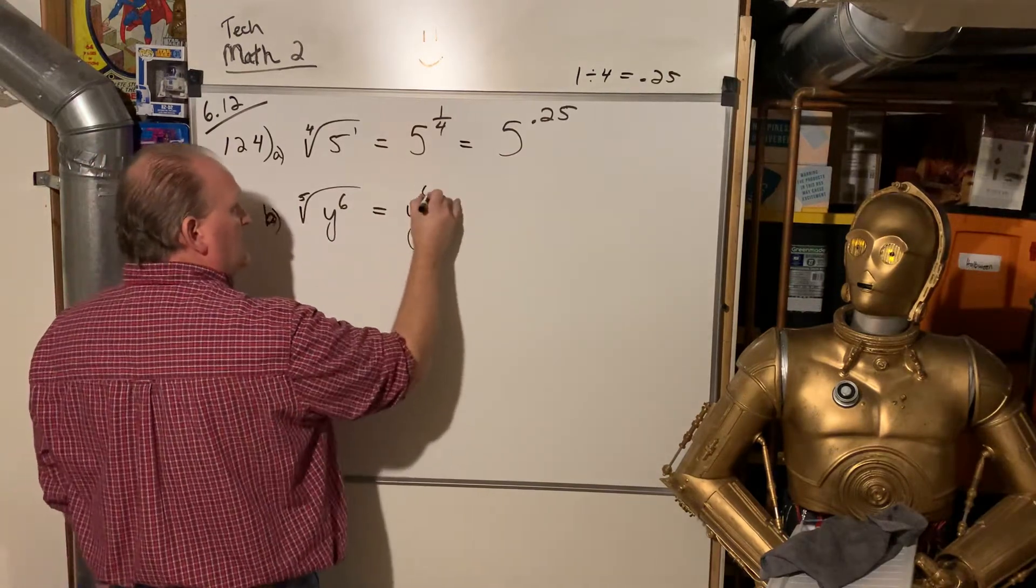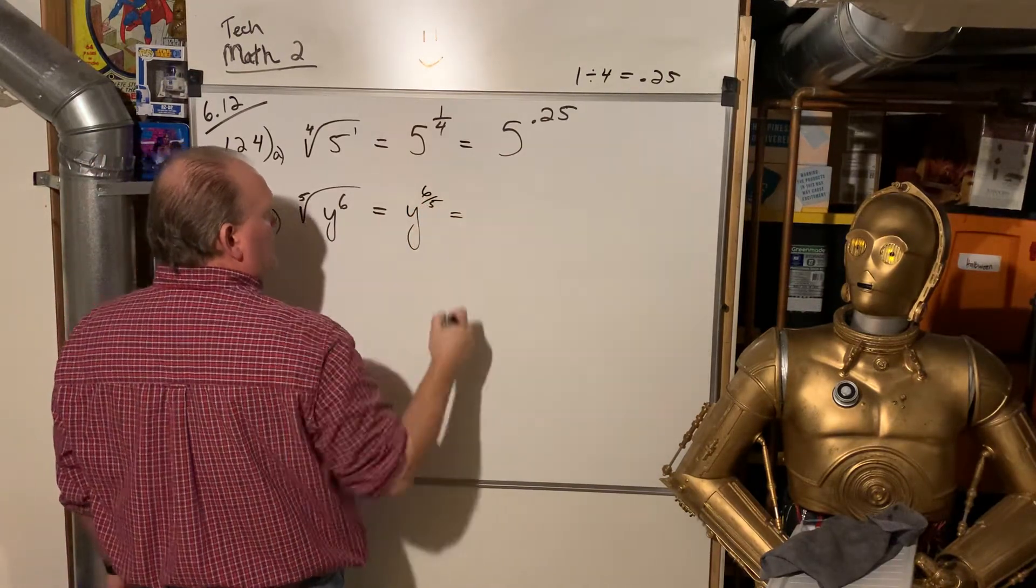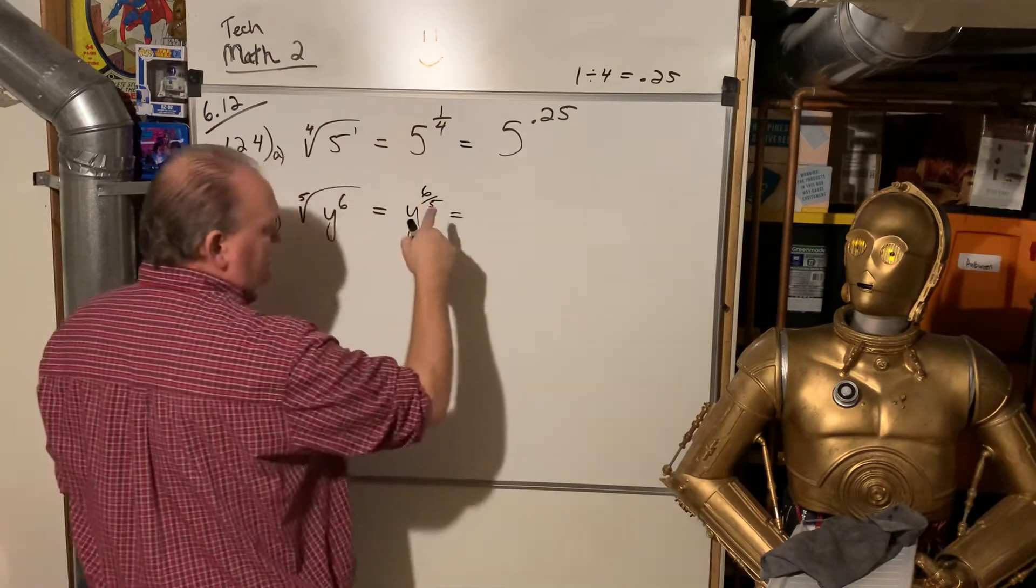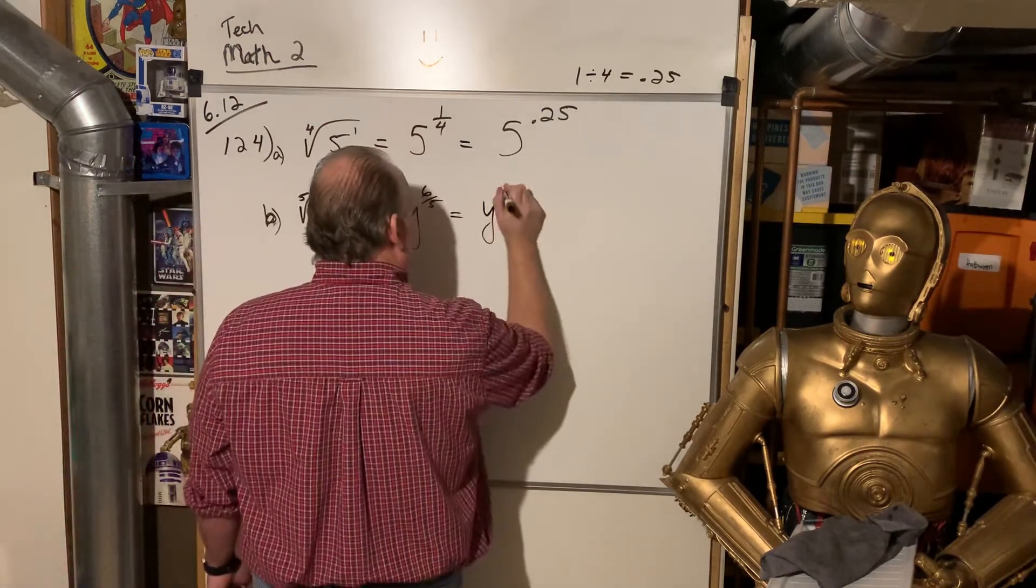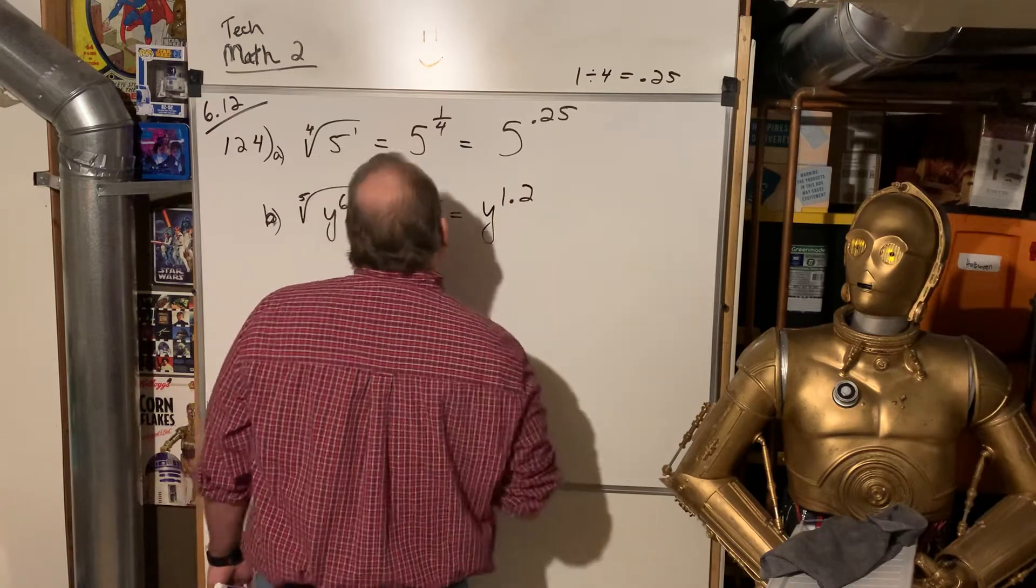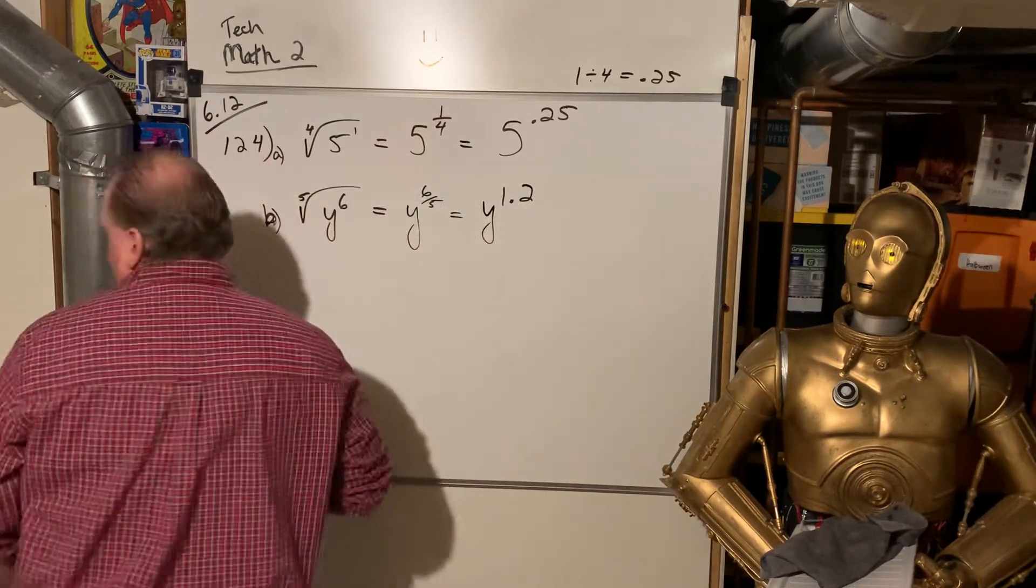So they don't actually want a decimal approximation. They don't want you to actually kick it into your calculator. They just want you to write it as a decimal exponent. Same with this one. Six-fifths. And so that's 6 divided by 5. In my calculator, I believe that's 1.2. Right? Yeah, 1.2.